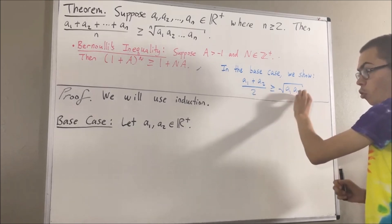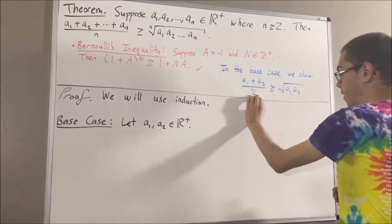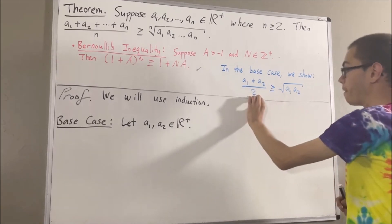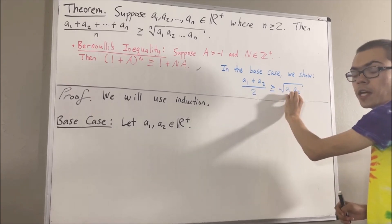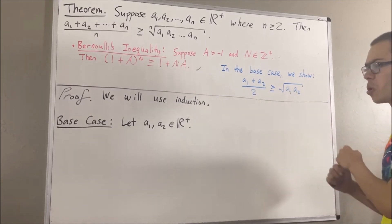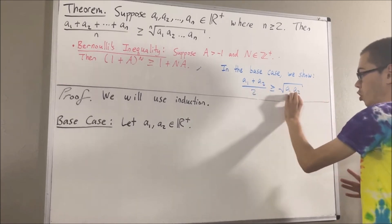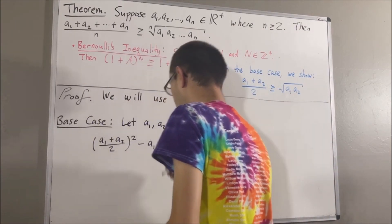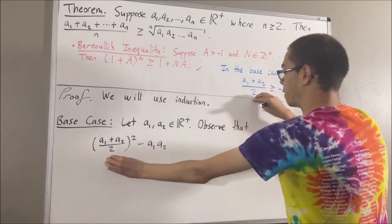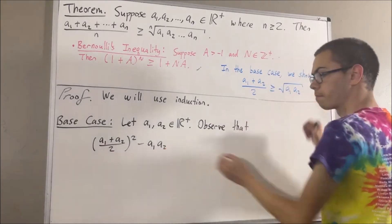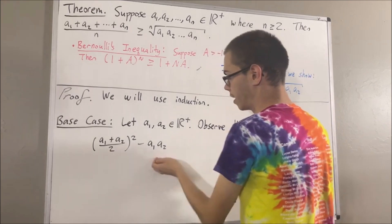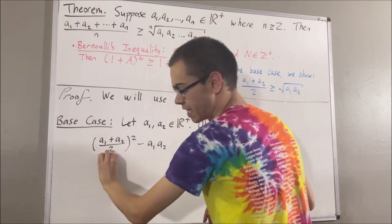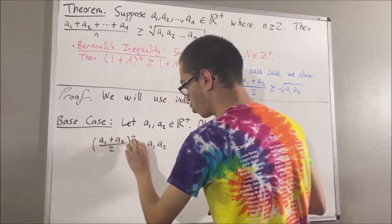Now, to show that this is true, we can show that the square of the left side is greater than or equal to the square of the right side. And to do that, it suffices to show that the square of this minus the square of this is greater than or equal to 0. I have the square of this minus the square of this, and we're going to show that this is greater than or equal to 0. Now, if we expand the parentheses out, we know it's just going to be a1 plus a2 squared over 4, or 1 fourth times a1 plus a2 squared.